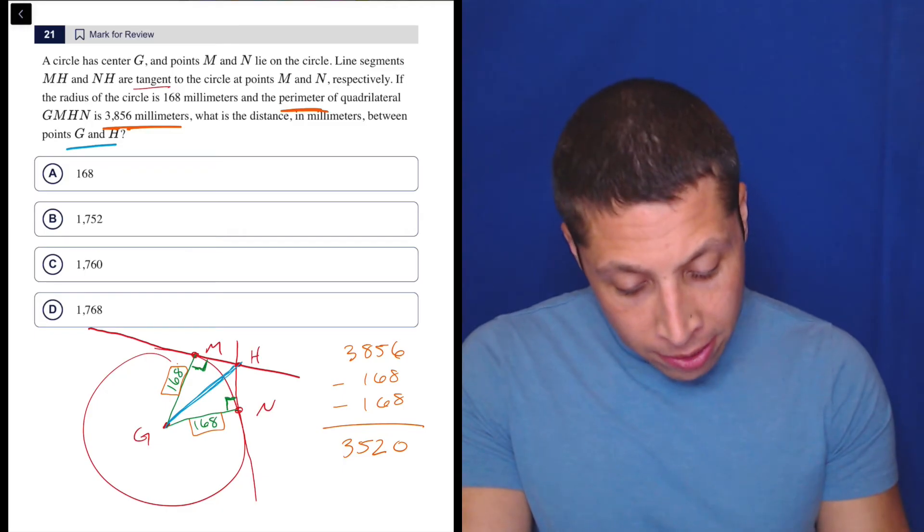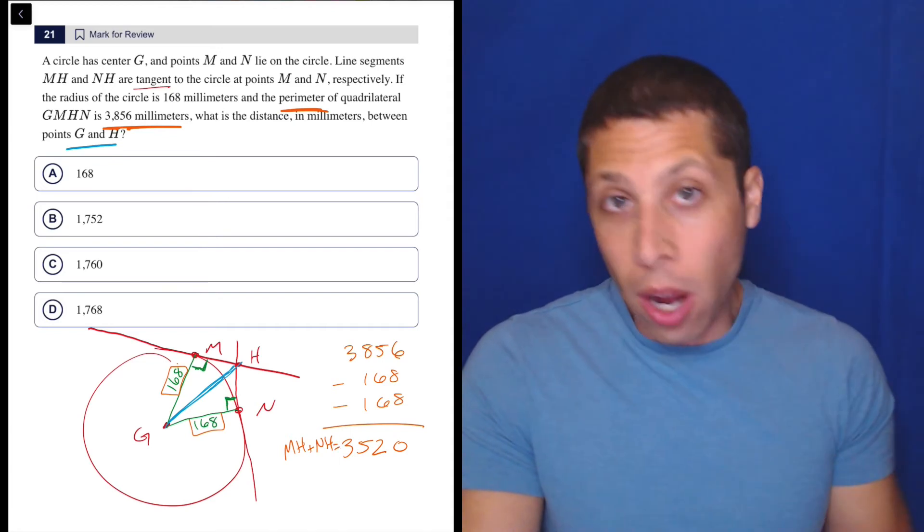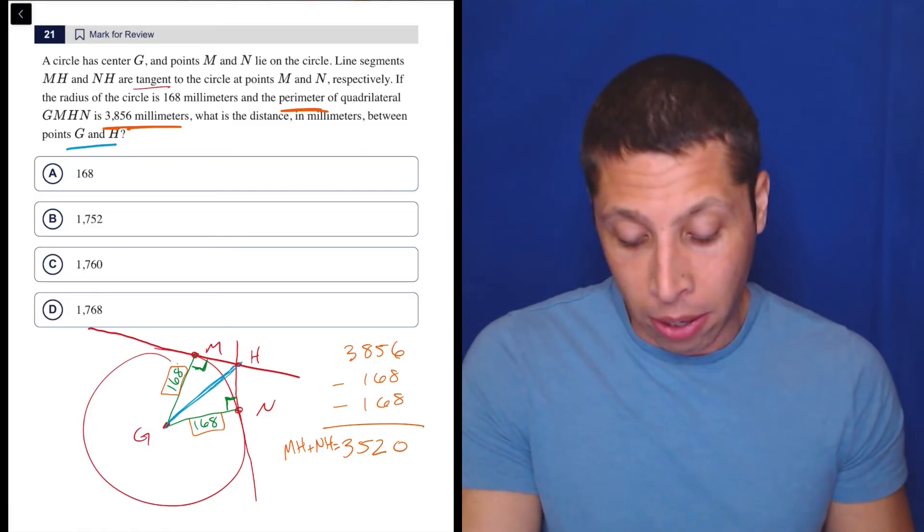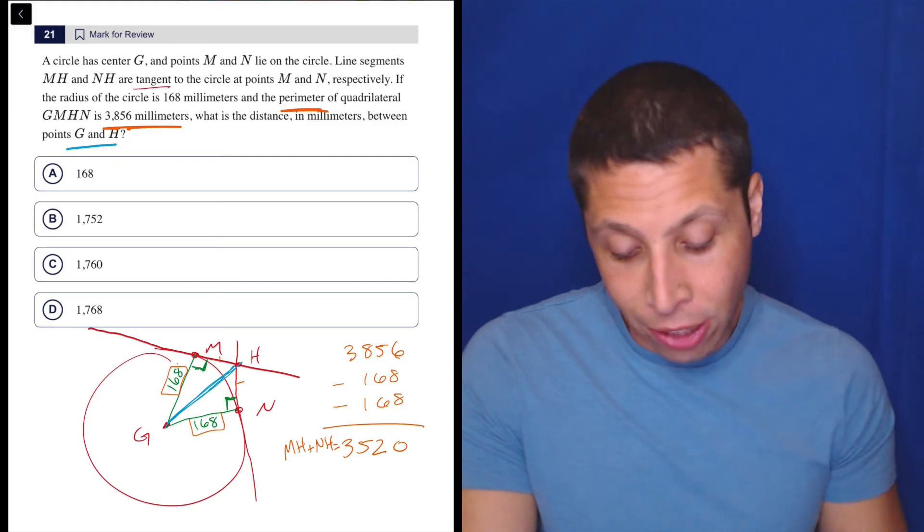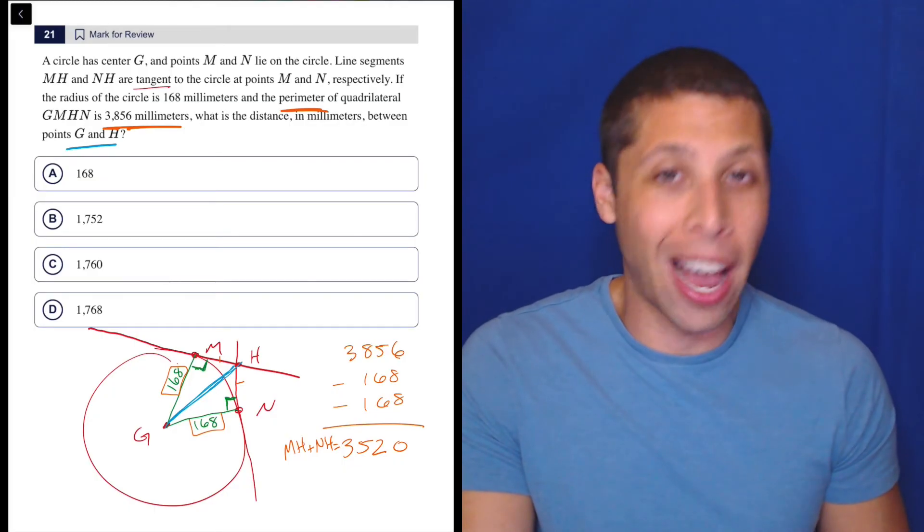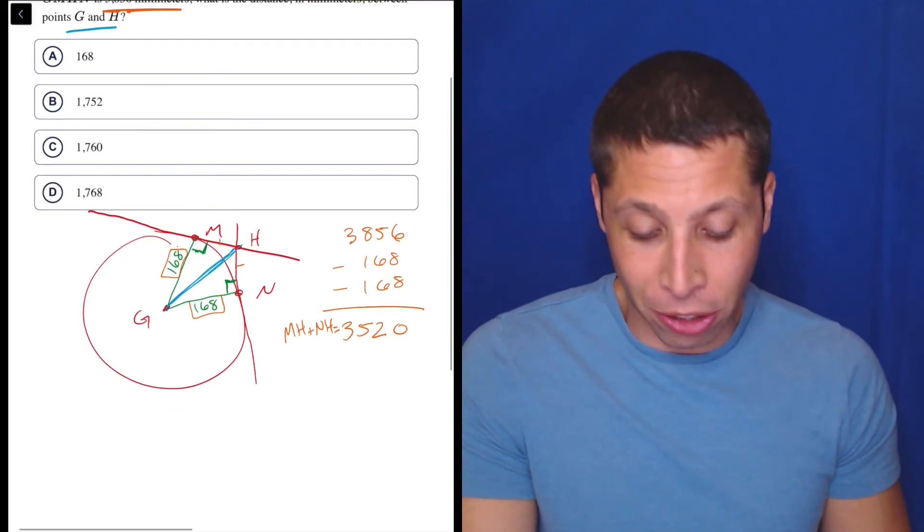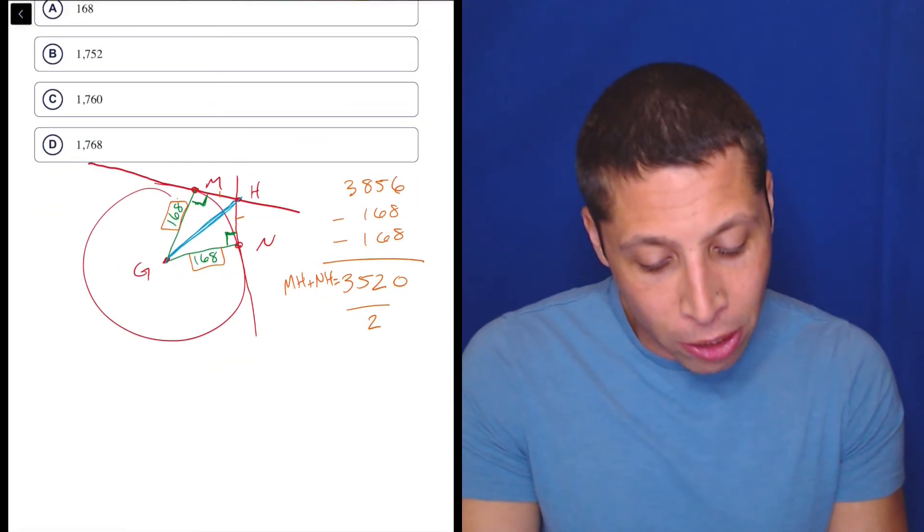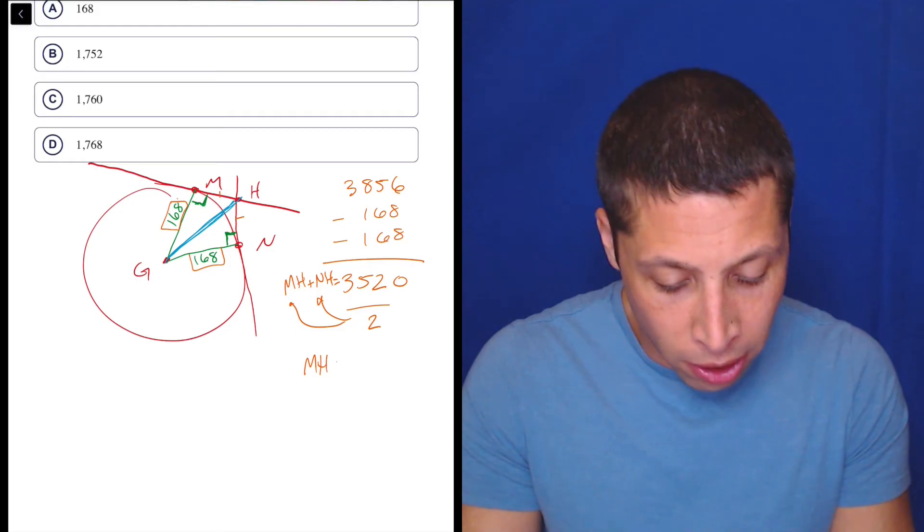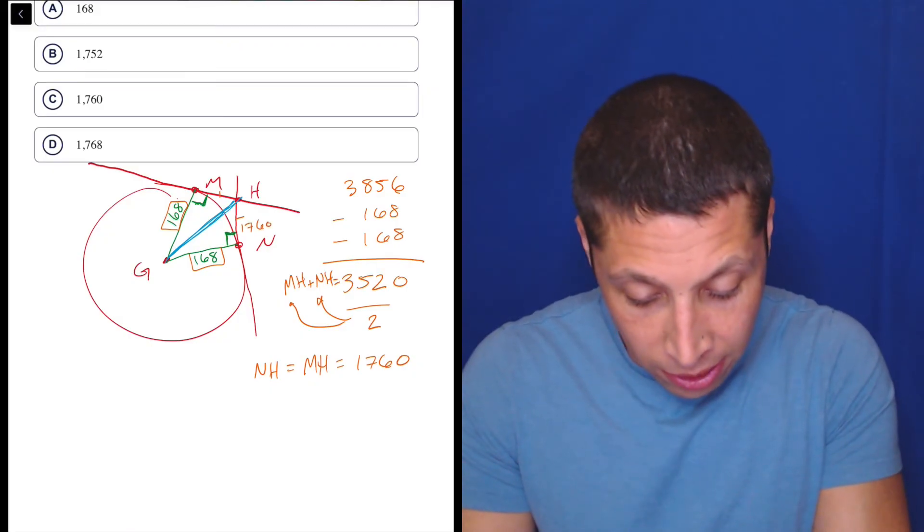Now to be clear, that is both MH and NH added together. So we don't know what they are. Here's a point where you just kind of have to make an assumption. I'm going to assume that those are the same, that MH and NH are the same. It probably has something to do with the way that this triangle is formed. At this point, I'm just like, well, I'm kind of stuck if they're not equal. They look equal in my picture, so let's just go with it. So that means if I divide this by 2, I will get the value of each of these. And that gives me that MH is 1760, and so is NH. So let's put that here: 1760 and 1760.